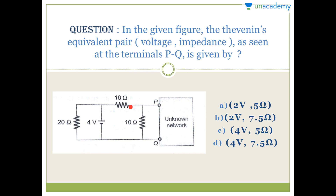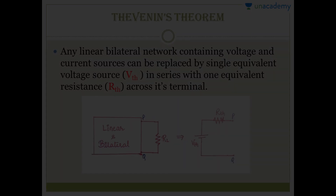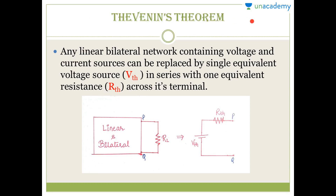However, we cannot easily apply nodal and mesh analysis when the circuit is very complicated, because there will be so many nodal or mesh equations, making the solution very complex. So we use Thevenin's theorem as a substitute. By using Thevenin's theorem we can easily find the voltage and current across any branch or circuit element of a complicated network.